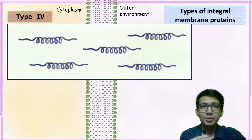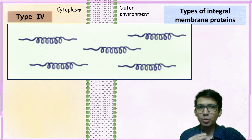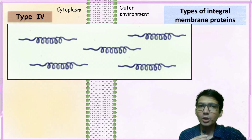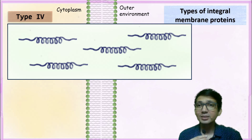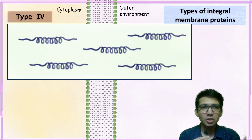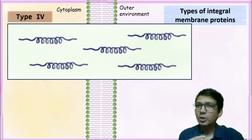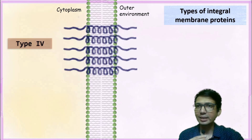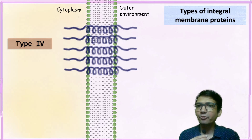In type 4 integral membrane protein, we have different polypeptide chains. Remember, it is not a single polypeptide chain — here we have different polypeptide chains. These polypeptide chains together are embedded inside the membrane. This is known as type 4 integral membrane protein.